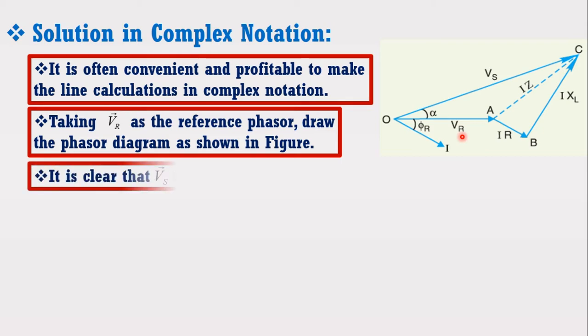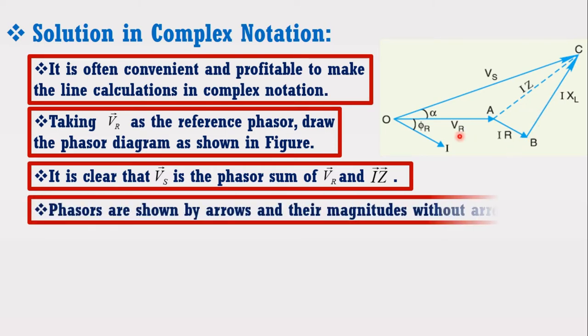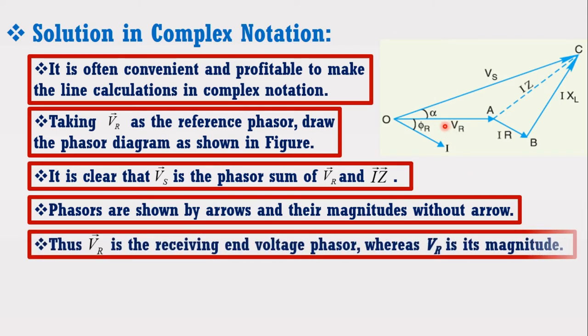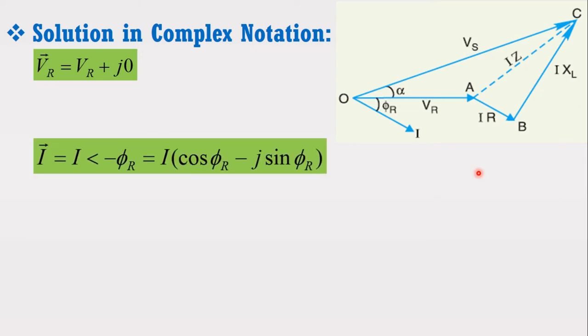Here, phasors are shown by arrows and their magnitude without arrow. Thus, Vr with arrow is the receiving end voltage phasor whereas Vr is its magnitude. Mathematically, voltage phasor is given as below and current phasor is given as below.